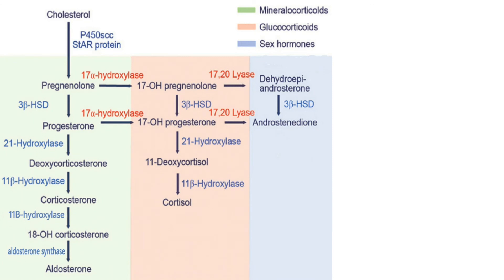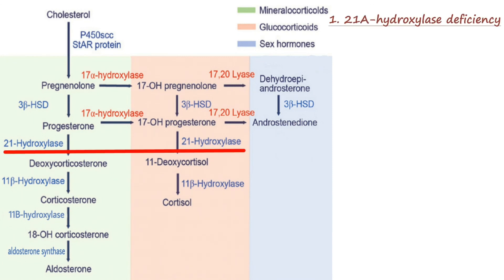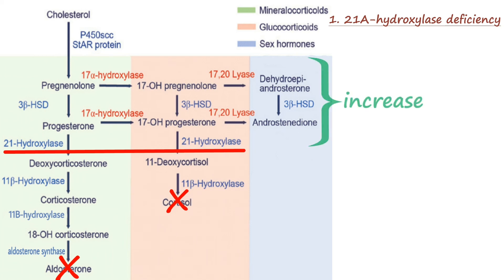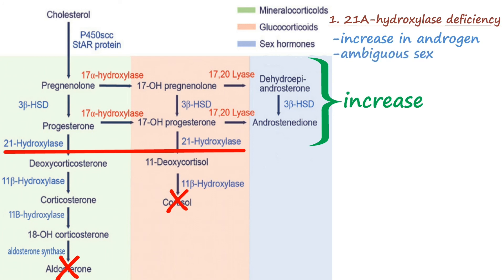There are three major enzyme deficiencies, the most common being deficiency of 21-alpha-hydroxylase. When this enzyme is deficient, aldosterone and cortisol cannot be synthesized. All intermediates prior to this block are channeled into androgen synthesis, producing more and more androgens. This leads to clitoral hypertrophy, and a child can be born with ambiguous genitalia where the sex cannot be determined, along with other various manifestations.